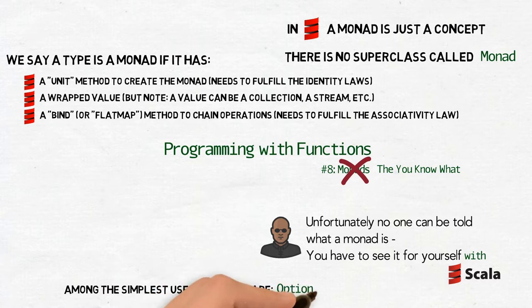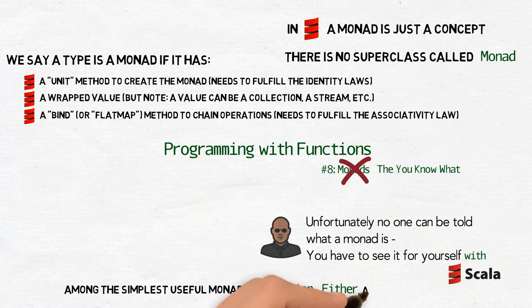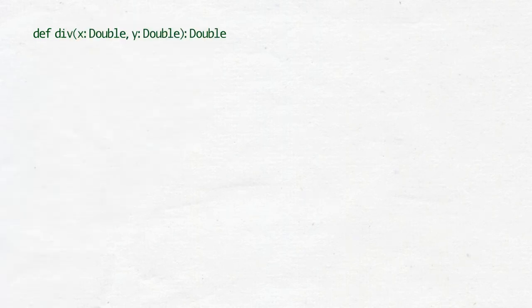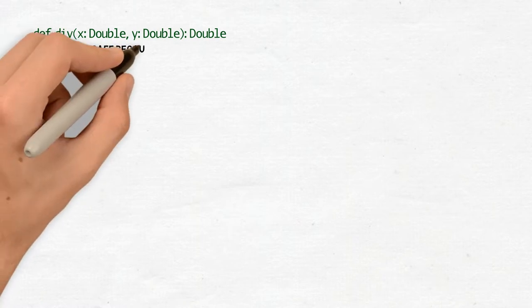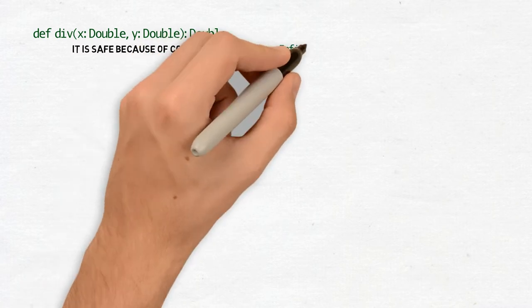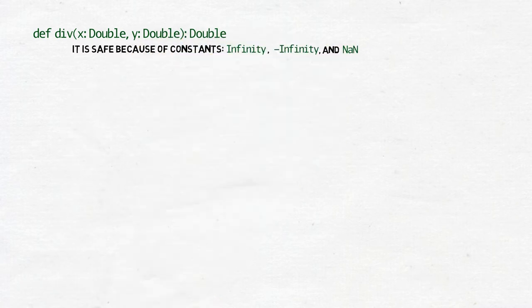There are three of them: Option, Either and Try. They will help you avoid one thing we should all avoid. In one of the previous chapters, I made an example of a method dividing two doubles, and how a solution to it was to use one of the special constants of the class double.